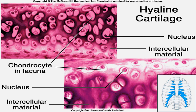In adults, hyaline cartilage forms the articular surfaces of long bones, the rib tips, the rings of the trachea, and parts of the skull. It also occurs under the skin — for instance, in ears and nose — and on many joint surfaces. The primary cell types are chondrocytes, which lie in spaces called lacunae with up to eight chondrocytes in each. Chondrocytes rely on diffusion to obtain nutrients, as cartilage is avascular — there are no blood vessels to carry blood to cartilage tissue.